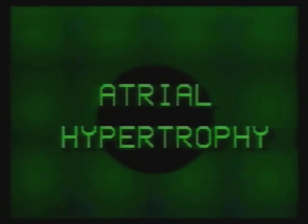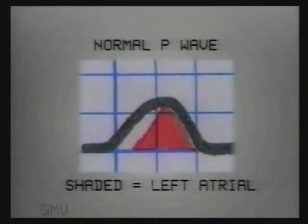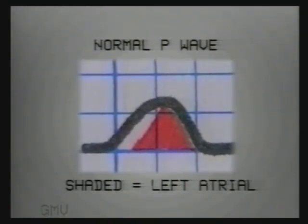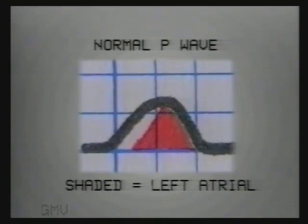Atrial hypertrophy can be diagnosed from the contour of the P waves, seen best in lead 2. The P wave represents depolarization of both the right and left atria.